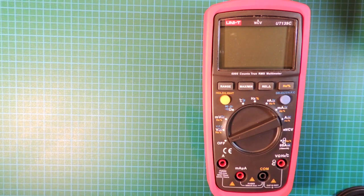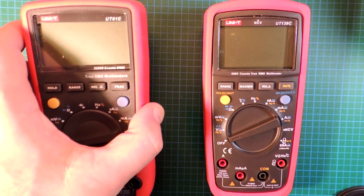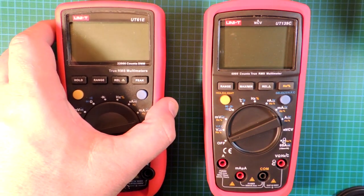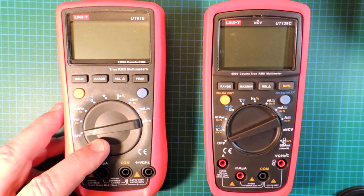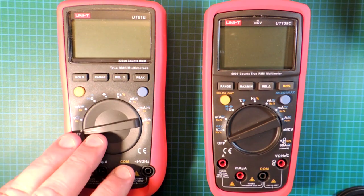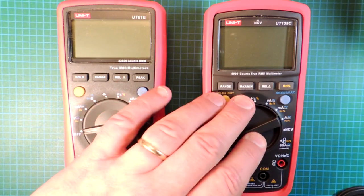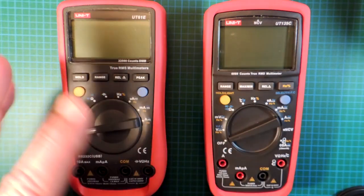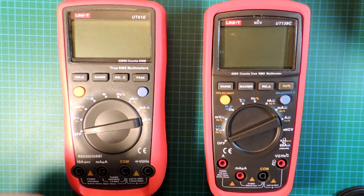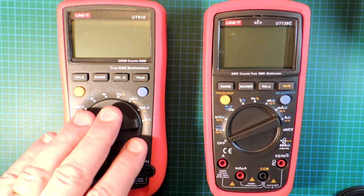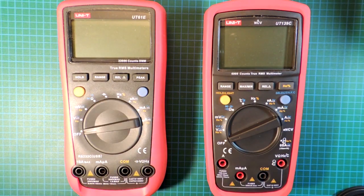The Uni-T139C is a newer meter. The meter I tore down previously, UT61E, is a meter that's about $9 more expensive. This is a 22,000 count meter and this is a 6,000 count meter, but there's some feature differences between these two. I thought I'd make this a useful comparison that I'll use the 61E sometimes in this video.